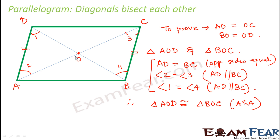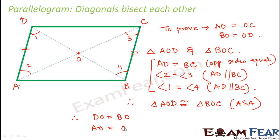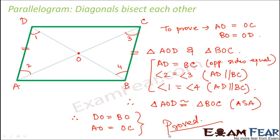Once these two triangles are congruent, their corresponding parts also become equal. Therefore DO is equal to BO and AO is equal to OC - which is exactly what we wanted to prove. Hence proved: the diagonals in a parallelogram always bisect each other. We have now discussed and proved all four major properties of a parallelogram.